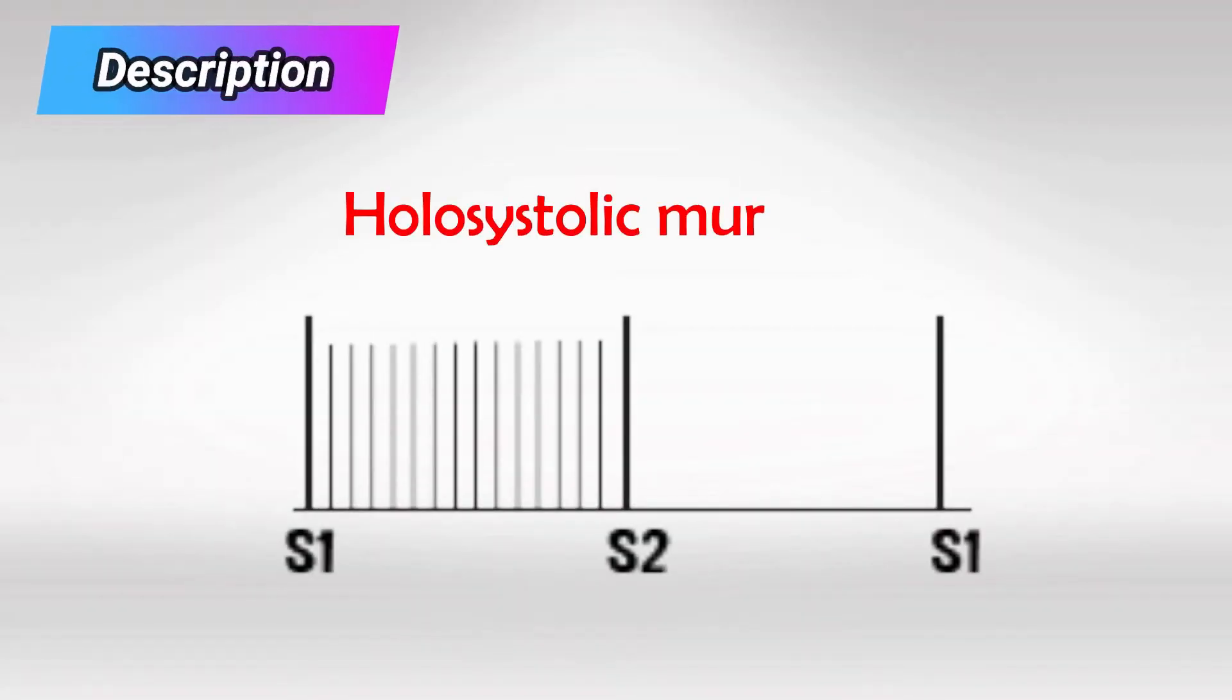It's a holosystolic murmur, just like mitral and tricuspid regurgitation. It's holosystolic, so we expect the murmur to be in between the first and second heart sound, and it's holo which means constant, so it fills the entire gap between the first and second heart sound.